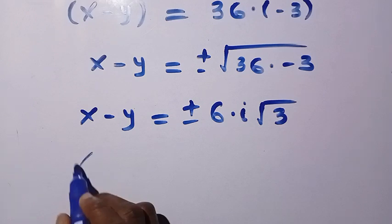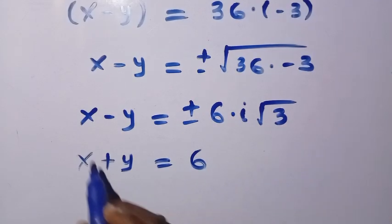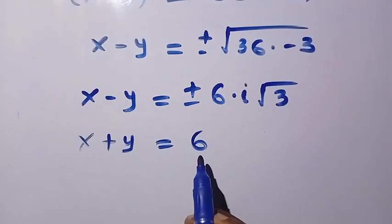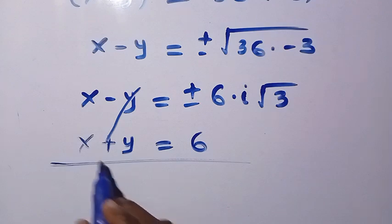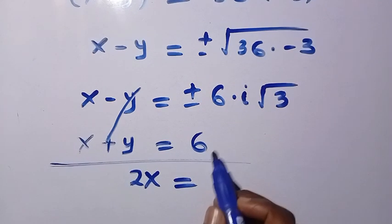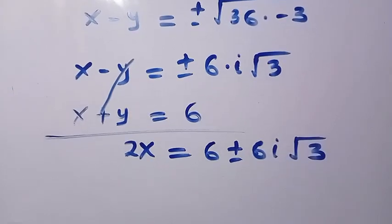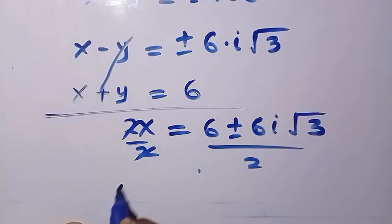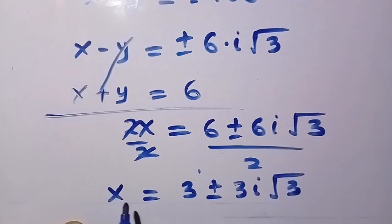Recalling equation 1, x plus y equals 6, we now have two equations: x minus y equals ±6i√3, and x plus y equals 6. Adding them using the elimination method, the y terms cancel and we get 2x equals 6 plus or minus 6i√3. Dividing both sides by 2 gives x equals 3 plus or minus 3i√3.